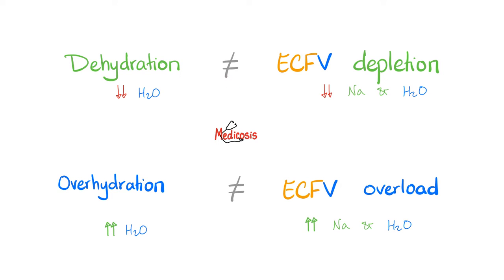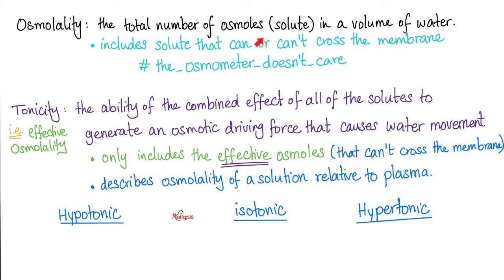Please never confuse dehydration with volume depletion. Dehydration is when you lose pure water — that patient needs water replacement. Volume depletion is when you lose salt and water — that patient needs water and electrolytes. Big difference. If you want to understand the difference between osmolarity and tonicity, please refer to my physiology playlist as well as my Fluids and Electrolytes playlist.